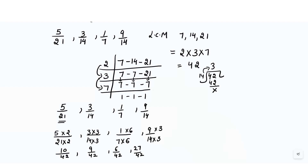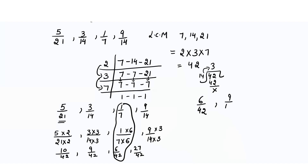Now all denominators are the same, so we can arrange these fractions in ascending or descending order. In ascending order, the smallest is 6/42, then 9/42, then 10/42.